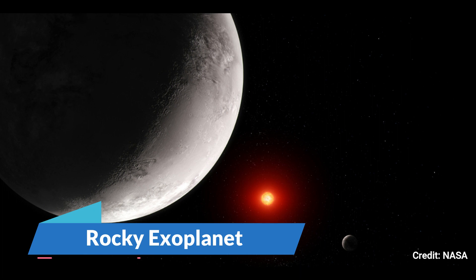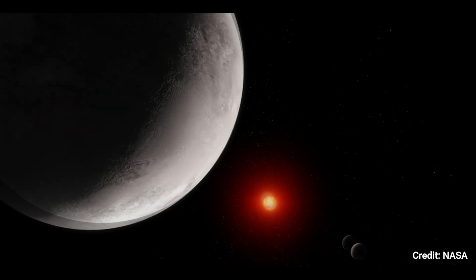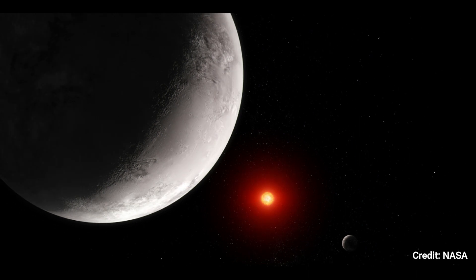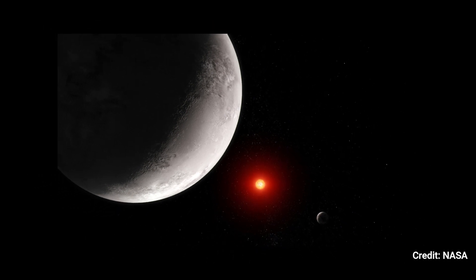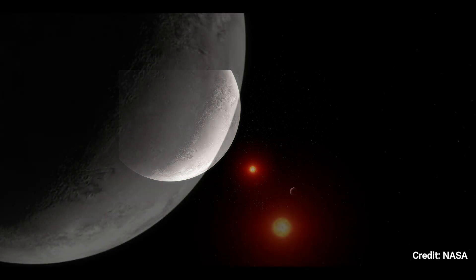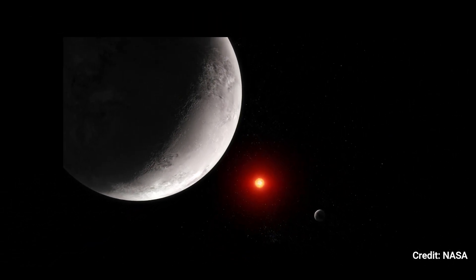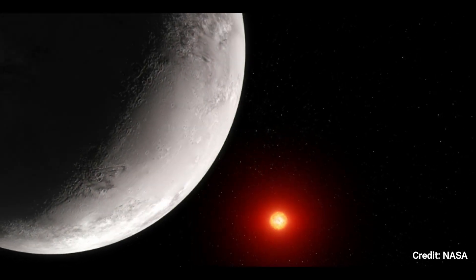Number 5. Rocky exoplanet TRAPPIST-1c. Based on this work, this artist's concept depicts what the hot, rocky exoplanet TRAPPIST-1c would look like. TRAPPIST-1c, the second of the TRAPPIST-1 system's seven known planets, orbits its star at a distance of 0.016 AU, completing one round in roughly 2.42 Earth days. TRAPPIST-1c is somewhat larger than Earth, but has around the same density, indicating that it is rocky in composition.